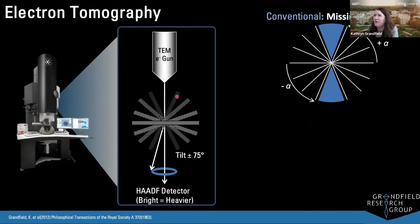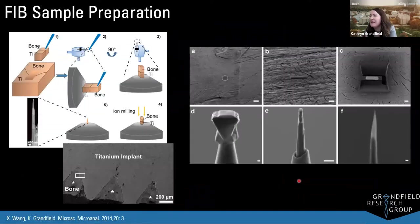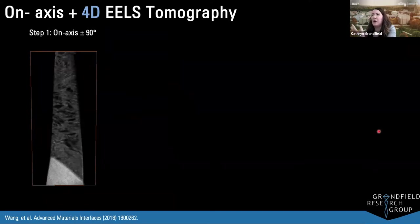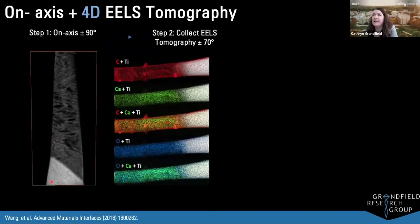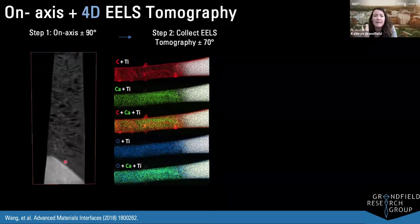To move to 4D, we switch to cylindrical samples so we can collect information over the whole range without the missing wedge of information — this is on-axis tomography. We make these cylindrical samples in the FIB in a similar liftout process, but mill in an annular fashion to create a sharp cylindrical sample. Now we can do four-dimensional imaging: starting with three-dimensional structural imaging of our bone-implant interface.